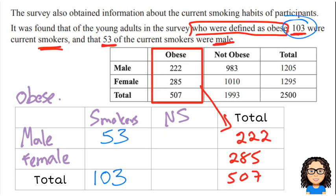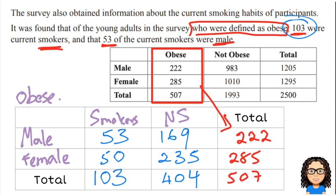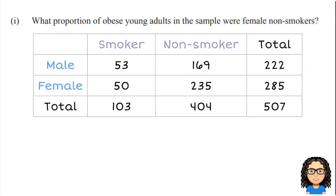Now I can work out the remaining numbers. 53 plus 50 gives us 103 total smokers. For the non-smoking numbers: 222 minus 53 gives 169, 285 minus 50 gives 235, and 507 minus 103 gives 404. Getting to this value of 235 gets you the U towards your achieved. Here's the table tidied up.